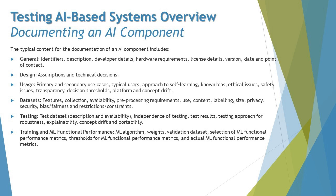Usage documentation includes typical users, approaches to self-learning, known biases, ethical issues, safety issues, transparency, decision threshold, platform, and concept drift. We'll be talking about concept drift shortly in the next tutorial. Data is another important aspect — documentation covers features, collections, availability, pre-processing requirements, use content, labeling, size, privacy, security, bias or fairness, and restrictions or constraints.